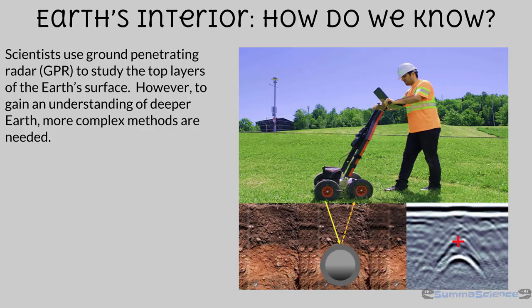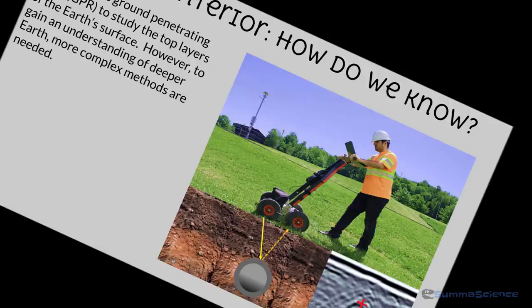So you might be asking yourself, how do we know what these layers of the earth are made out of? There are a variety of methods scientists have used. For rock layers closer to the surface, GPR, or ground penetrating radar, is used. This allows scientists to notice changes in the rock layers without needing to expose the layer itself. However, this lawnmower-looking device is limited to the topmost layers of the earth's surface and does not penetrate deep enough to study the interior layers.